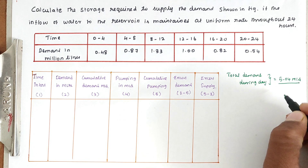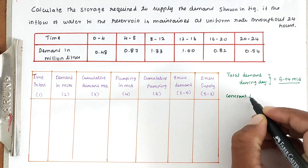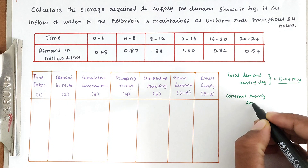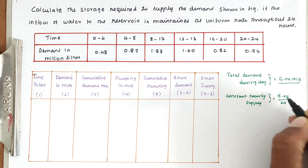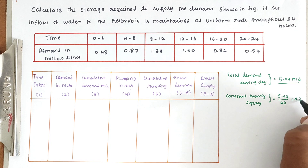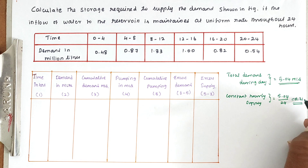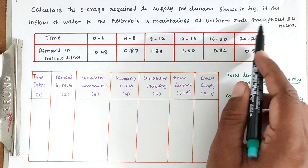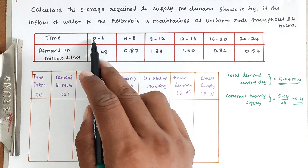The constant supply rate is 5.04 divided by 24 hours, which gives 0.21 million liters per hour. So per day we need 5.04 million liters, but we supply at 0.21 million liters per hour because the reservoir is maintained at a uniform rate over 24 hours. The time intervals given are 4-hour periods: 0 to 4, 4 to 8, 8 to 12, 12 to 16, and so on.